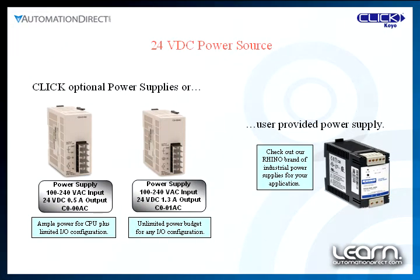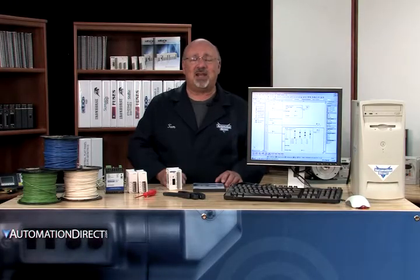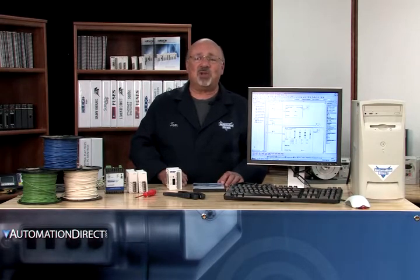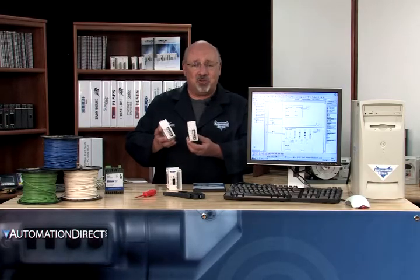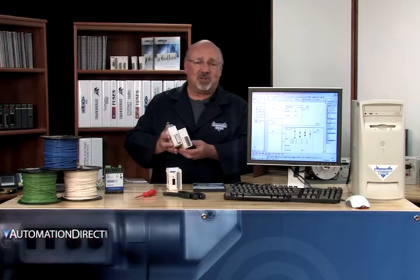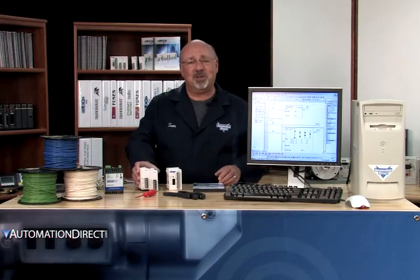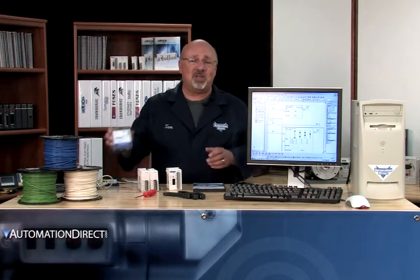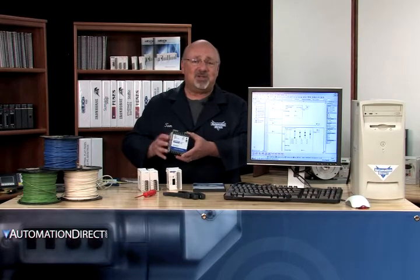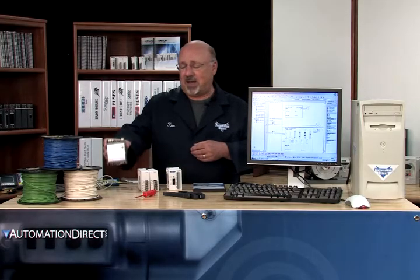We have a couple of choices here. If you already have a 24 volt DC power source with good regulation and at least 120 milliamp capacity — 180 milliamp for the C000DD1-DCPU — you are all set. The other choices are to use one of the optional Qlik 24 volt DC power supplies, or to purchase a 24 volt DC power supply such as the Rhino series offered by AutomationDirect.com.